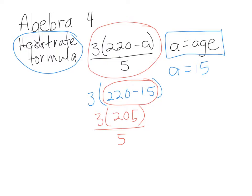So 3 times 205, take care of the numerator first. 3 times 205 is 615 divided by 5, and stop, drop, divide.